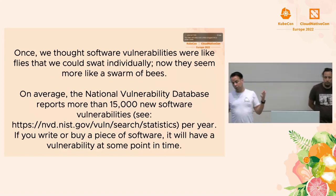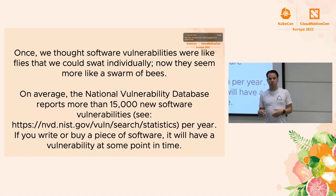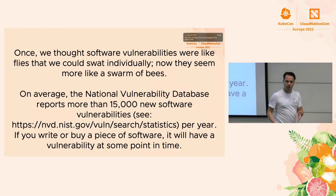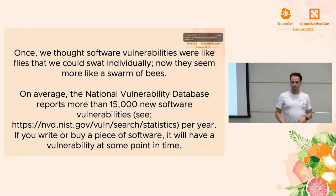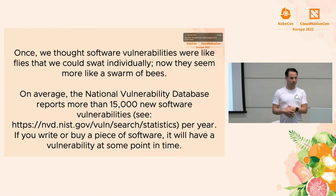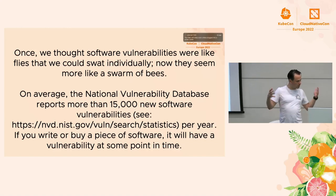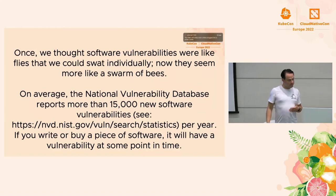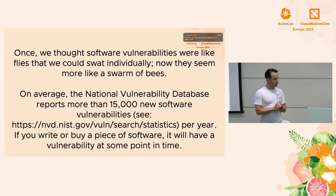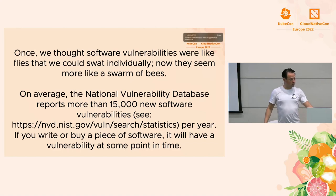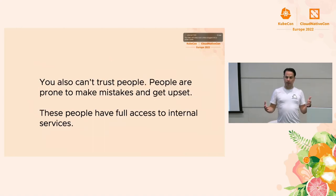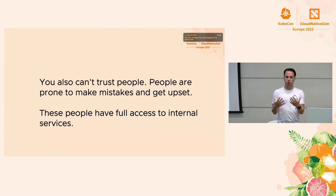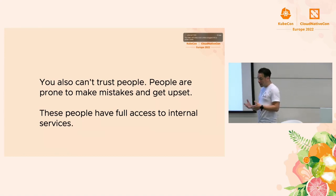We know there will be vulnerabilities in software, but we can't just tackle them as they come — it's more like being a beekeeper of a massive honey production operation. On average, the National Vulnerability Database reports more than 15,000 new software vulnerabilities per year. It's a given that you'll be struggling just to make sure things don't get compromised, which begs for novel approaches.